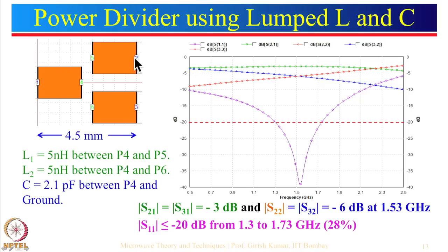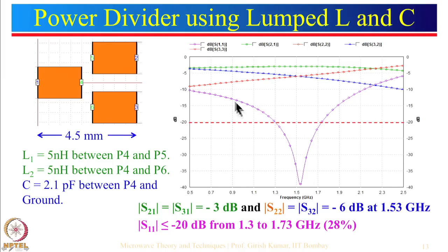Since there is no isolation resistance, S22 = S32 = minus 6 dB at center frequency. This is a simple way to make a compact power divider. If you increase the inductance values — say from 5 nanohenry to 10 nanohenry — and correspondingly change the capacitance value, the design can be shifted to a lower frequency.